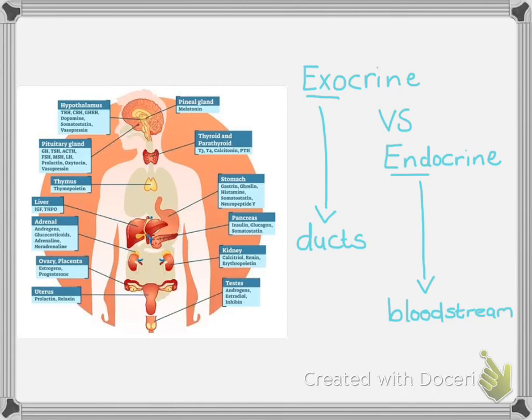Their prefix gives us a clue as to the main difference. Exocrine glands are glands that have a duct — a specialized tube that transports the substance from where it's made to its target. Endocrine glands, on the other hand, are glands that secrete their hormones directly into the bloodstream. You will need to know the difference between these two glands.